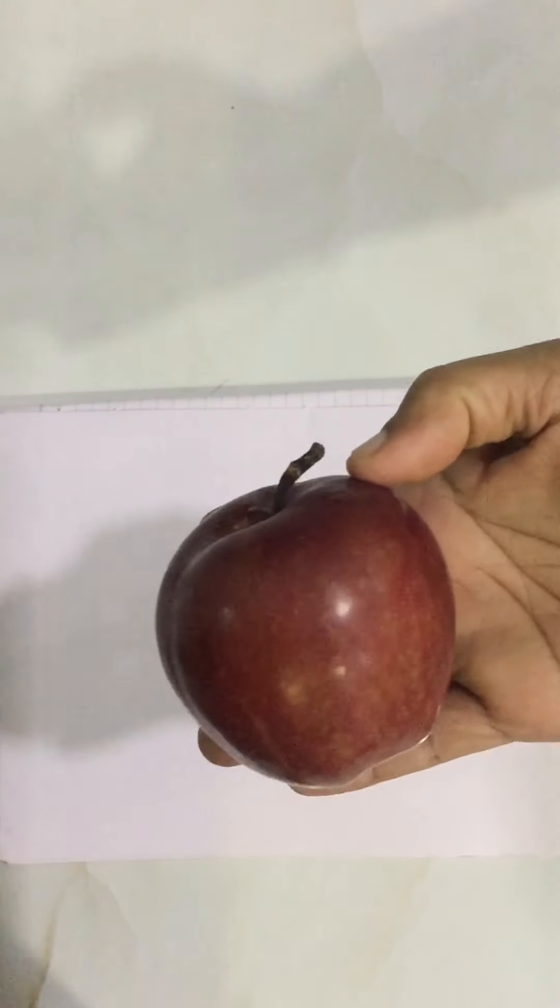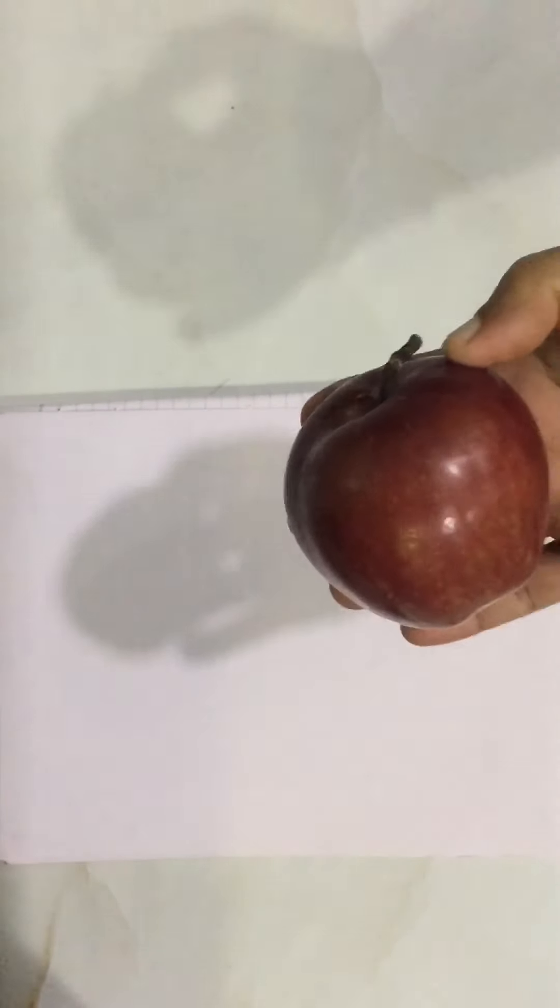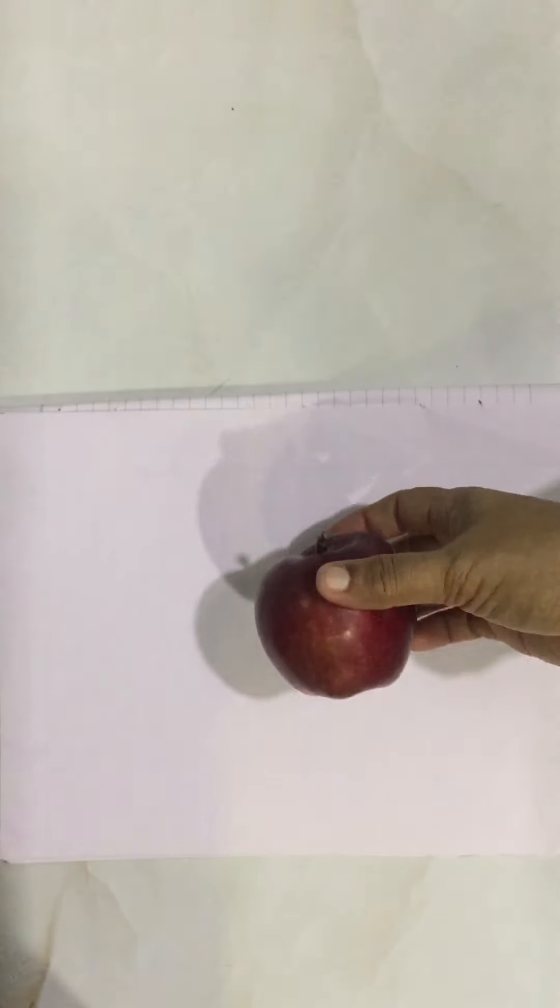Hi children, what can you see over here? What is it? It is an apple. Wow, an apple. What happens when I place the apple here?